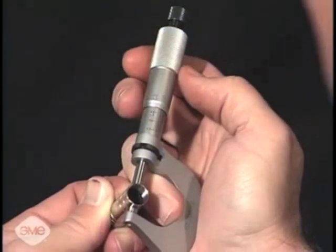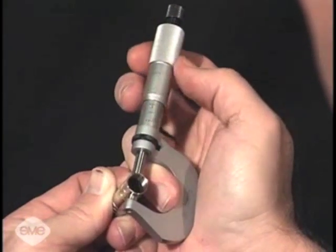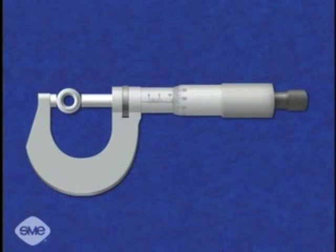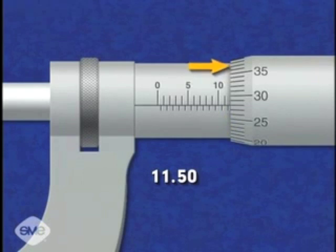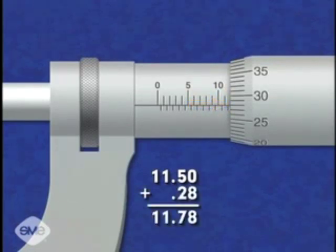The thimble is rotated and the spindle advanced until the feature is held between the anvil and the spindle face. To read this micrometer, add the number of millimeters and half millimeters visible on the sleeve to the number of hundredths of a millimeter indicated by the thimble graduation, which coincides with the reading line on the micrometer's sleeve.